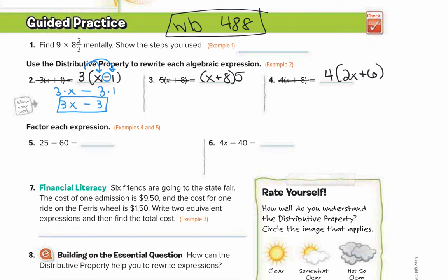For number 3, even if the number is in the back, you still distribute it the same way. So we still have 5 times x plus 5 times 8, which gives 5x plus 40.